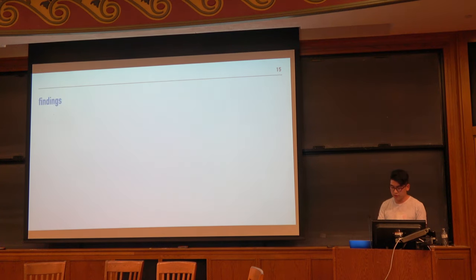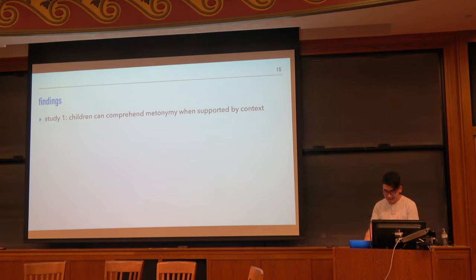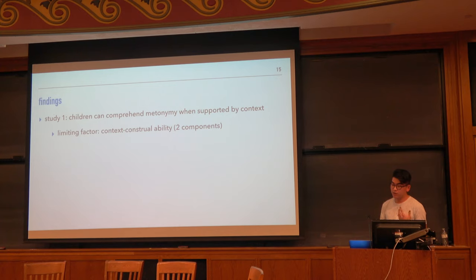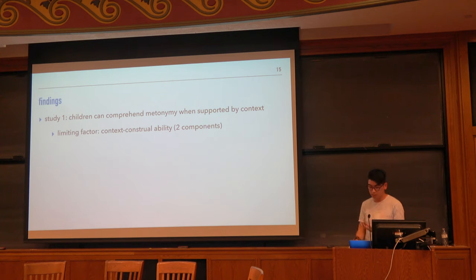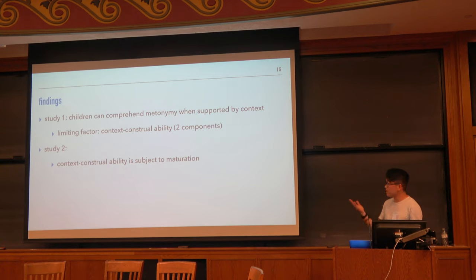Let me summarize what I've shown today. In study one, we showed that children can comprehend metonymy when supported by context, even at an early age. Together with the findings in Falcom et al. 2017, the limiting factor in children's metonymy comprehension seems to be their ability to come up with supporting context — their context construability. In study two, we showed that metonymy comprehension is subject to maturation: participant age, as an index of how rich their bank of experiences is, significantly correlated with performance in the context solicitation task.